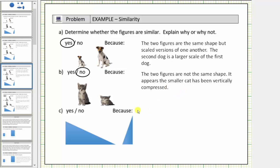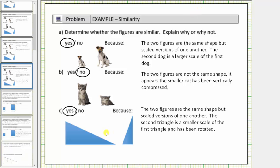And for our last example, we have two triangles. It does appear these two triangles are the same shape. The second triangle is a smaller scaled version of the first triangle and it has also been rotated. So we will say yes, the two triangles are similar because the two figures are the same shape but scaled versions of one another. The second triangle is a smaller scale of the first triangle and has been rotated.